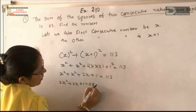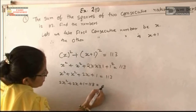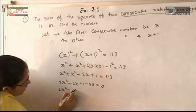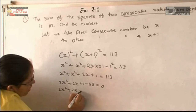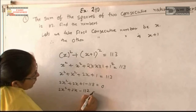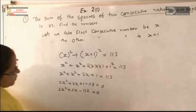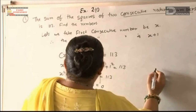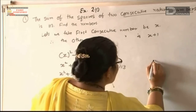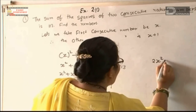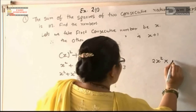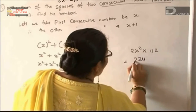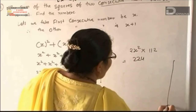So x squared plus x squared plus 2x plus 1 equals 130. Moving 130 to the left side it becomes minus 130, giving us 2x squared plus 2x minus 129 equal to 0. Now we will make the factors — we will multiply the first value by the third value.